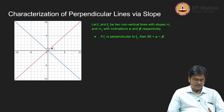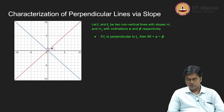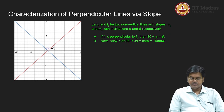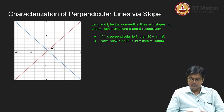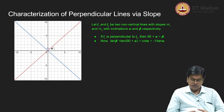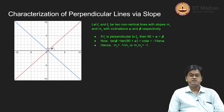If L1 is perpendicular to L2, then beta equals 90 plus alpha. To find the relation between slopes, it is a good idea to take the tangent of beta. So tan(beta) equals tan(90 + alpha). Using the standard formula, tan(90 + alpha) equals minus cot(alpha), which equals minus 1 divided by tan(alpha). Since tan(beta) is the slope m2 and tan(alpha) is the slope m1, we derive that m2 equals minus 1 over m1, or equivalently, m1 times m2 equals minus 1.